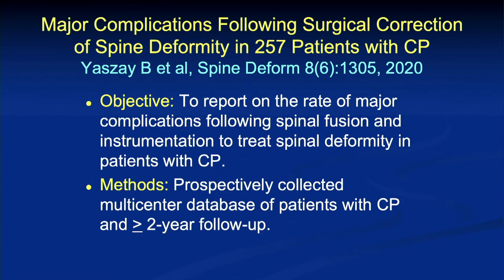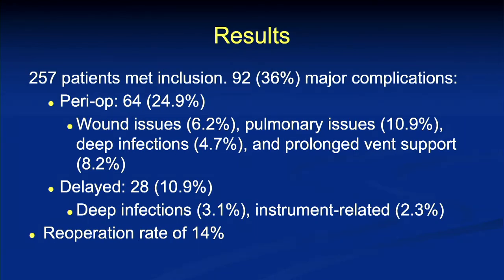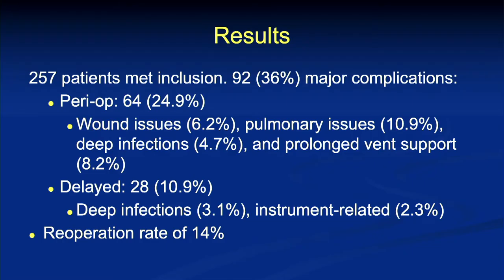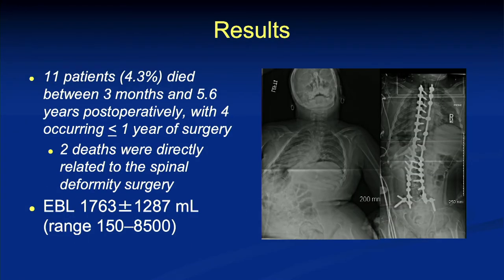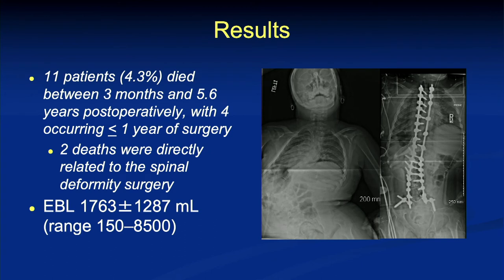After that initial paper, we did a follow-up study recently published with greater than two years of follow-up — 257 patients met our criteria. After reclassifying complications: 25% of patients had a perioperative complication, wound issues in 6%, pulmonary issues in 11%. Delayed infection was the primary reason at 3%, and instrument-related complications occurred 2.3% of the time, for a high re-operation rate of 14%. It was very humbling — 11 patients in the cohort died, 4% of patients passed away, with four passing within one year of surgery. Two deaths were directly related to the spinal procedure.